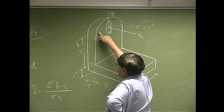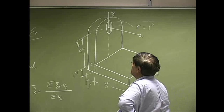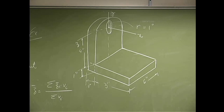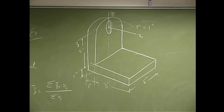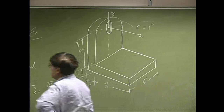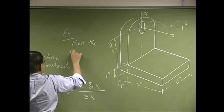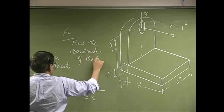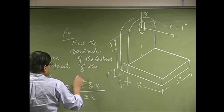On top of those two plates, there is a cylinder — but only half of it. It has a radius of three inches and a thickness of one inch. Then there is a hole at the top, and that hole has a circular cross-section with a radius of one inch and a thickness of one inch. The question is to find the coordinates of the centroid of the machine component.